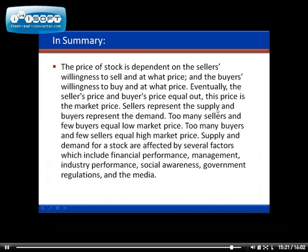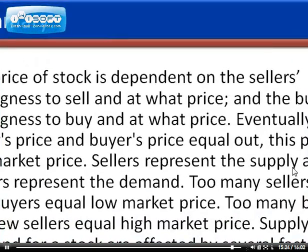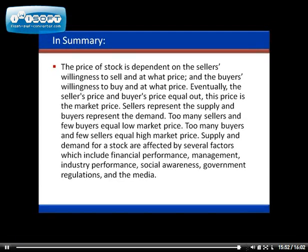In summary, the price of stock is dependent on the seller's willingness to sell and at what price, and the buyer's willingness to buy and at what price. Eventually the seller's price and buyer's price will equal out — this price is the market price. Sellers represent the supply and buyers represent the demand. Too many sellers and few buyers equals a low market price; too many buyers and few sellers equals a high market price. Supply and demand for a stock are affected by several factors: financial performance, management, industry performance, social awareness, government regulations, and the media.